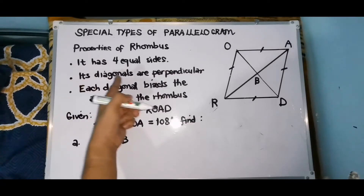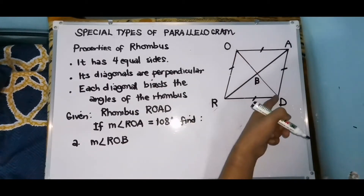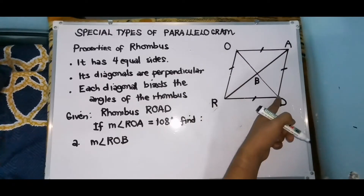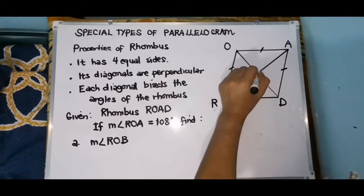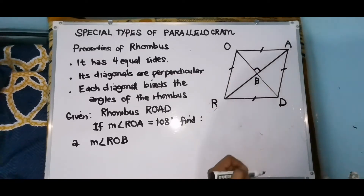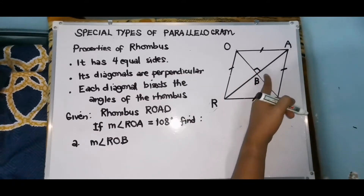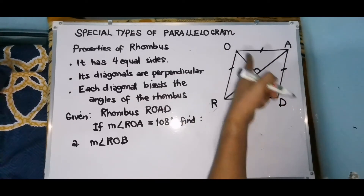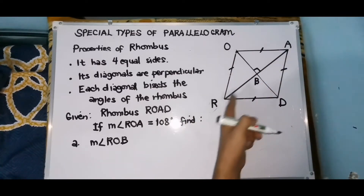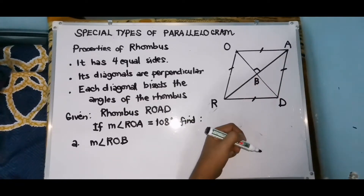Second property: its diagonals are perpendicular. So we have here two diagonals — diagonal OD and diagonal AR — and it forms a right angle. Lahat yan ay right angle ang magubo. So meron tayo ditong right angle OBA, OBR, RBD, and BDBA. Lahat yan ay right angle.